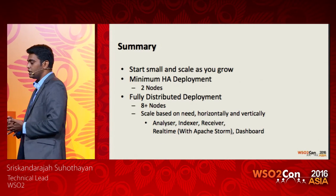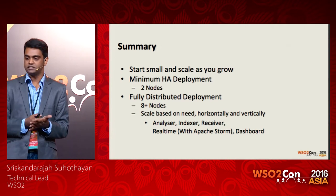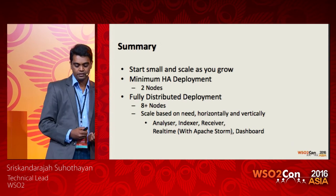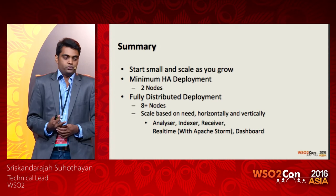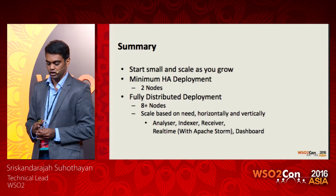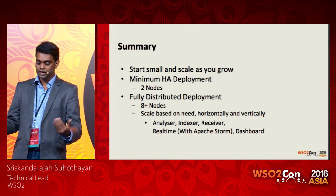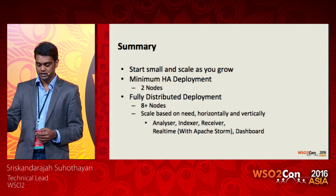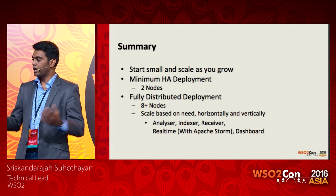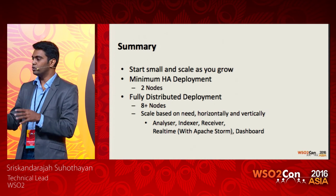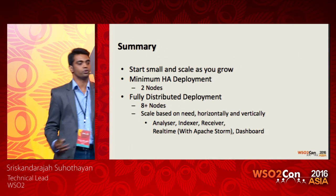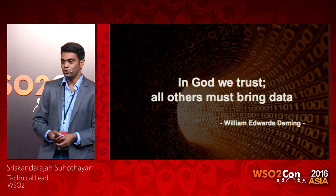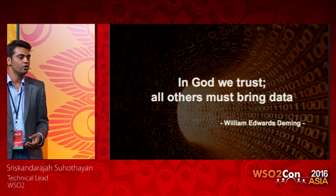In summary: start small and scale as you grow. The minimum HA deployment needs just two nodes. Always start there, integrate with existing products, and try to make sense of what you have. When the data grows, grow with it. For a fully distributed deployment, you may need more than eight nodes. You can horizontally and vertically scale different components — the analyzer, indexer, receiver, real-time engine, and dashboard — each based on your specific needs. Collect data as much as you can and envision your organization with a better perspective.